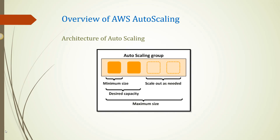Let's see the architecture of Autoscaling. Autoscaling is a feature provided by Amazon for running EC2 instances. Suppose you have hosted a web application on AWS EC2 and suddenly the requests increase. One EC2 instance cannot handle all the requests from clients or customers, so Autoscaling will increase the number of instances depending on the request and demand.